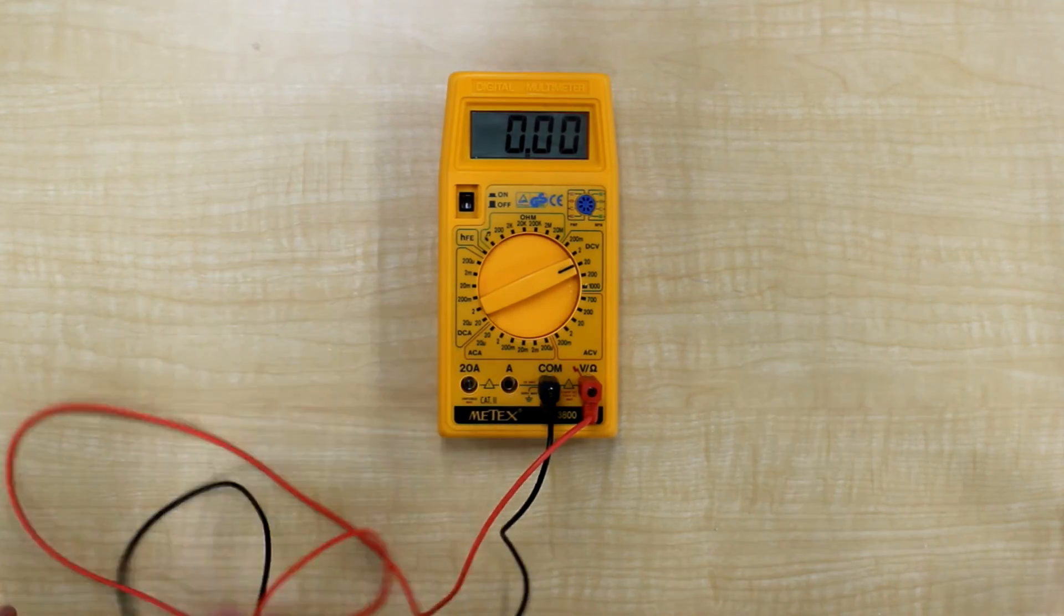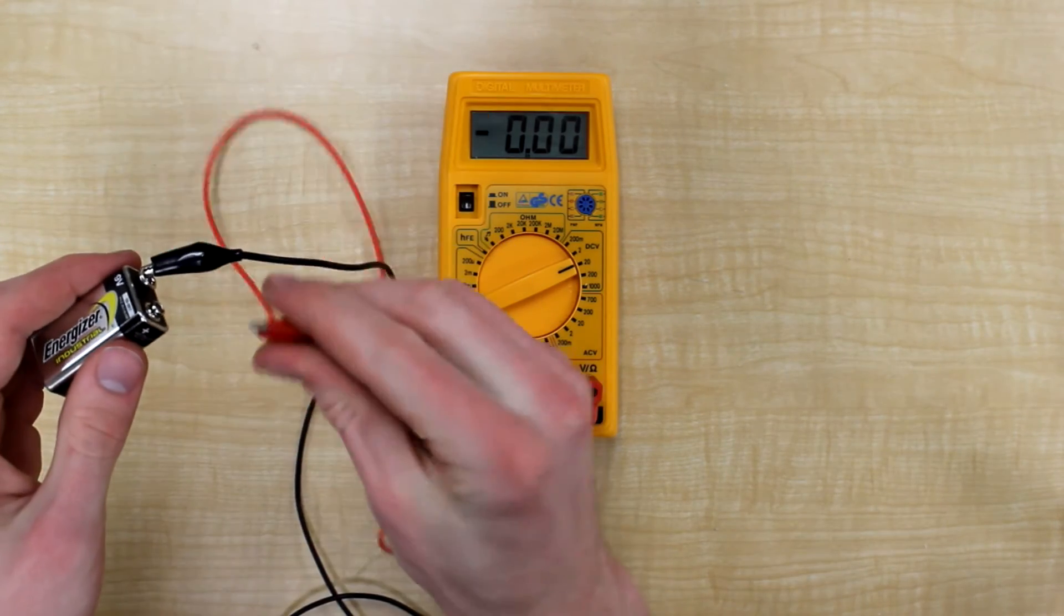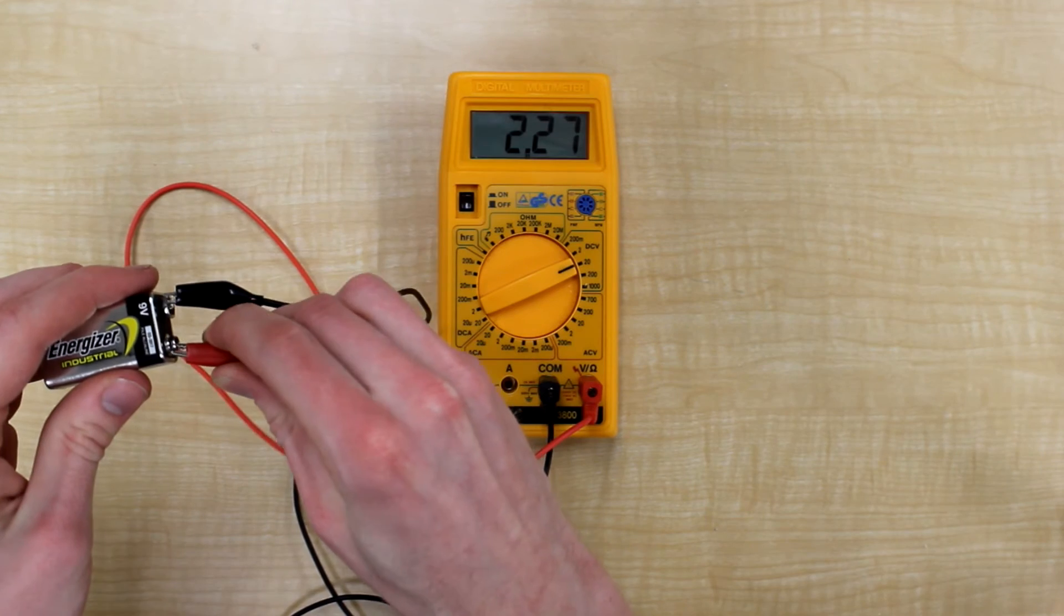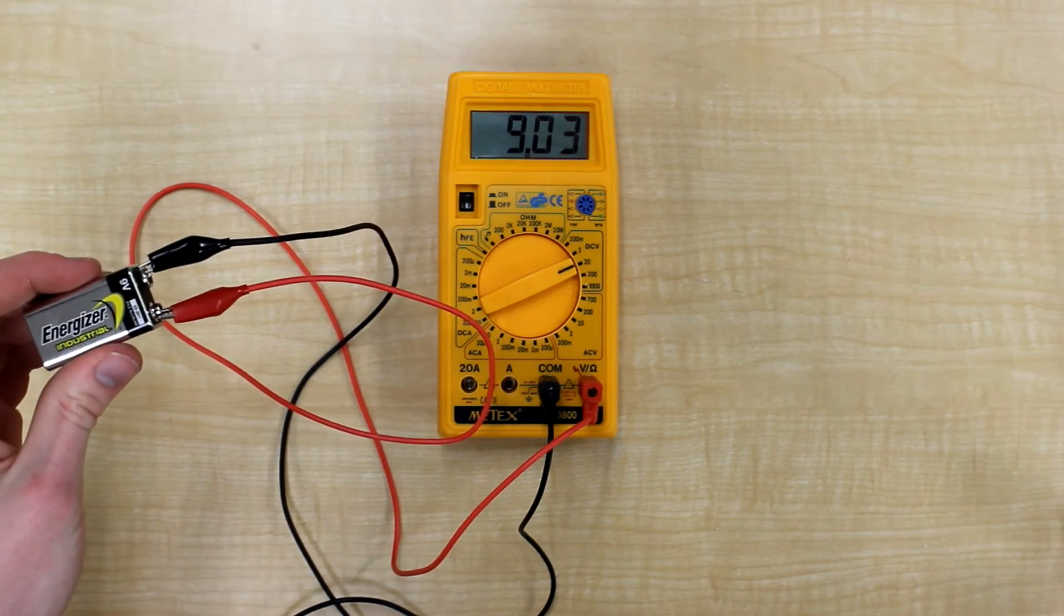Looking at another battery, we'll measure something different. Connecting the negative to the negative end, and the positive to the positive end, we find it's 9.03 volts, much closer to the 9 volts we were looking for.